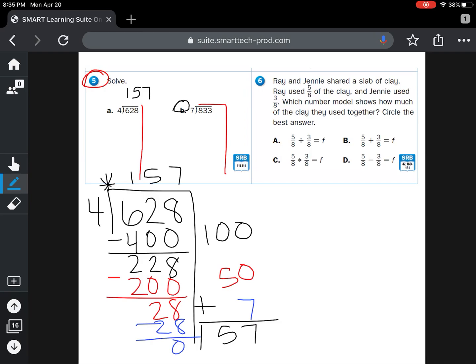Then for problem 6, it's another story problem. It says Ray and Jenny shared a slab of clay. Ray used 5 eighths of the clay and Jenny used 3 eighths of the clay. Which number model shows how much of the clay they used together? Circle the best answer.